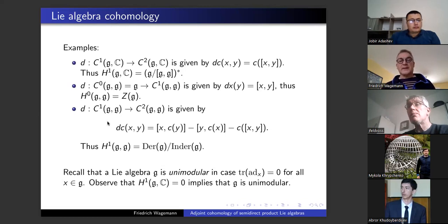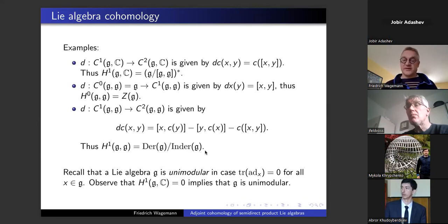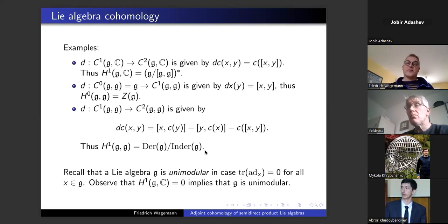The zeroth coboundary operator with adjoint coefficients goes from g to one-cochains and is given by the action, which for adjoint coefficients is the bracket. Thus H0 is just the center. For the first coboundary operator with adjoint coefficients, H1 is derivations divided by inner derivations — outer derivations.